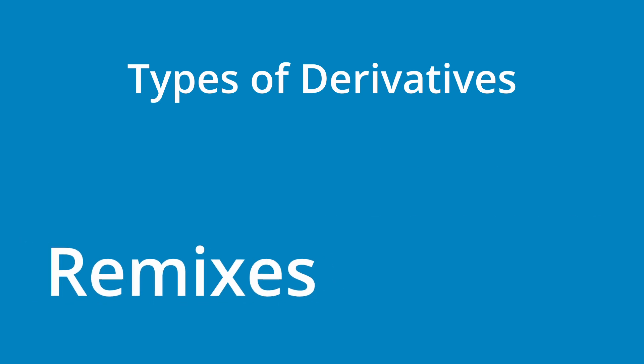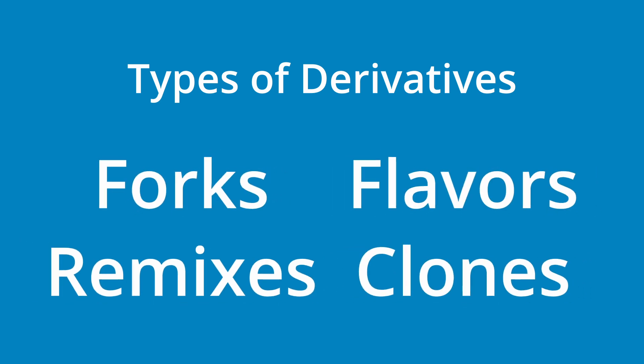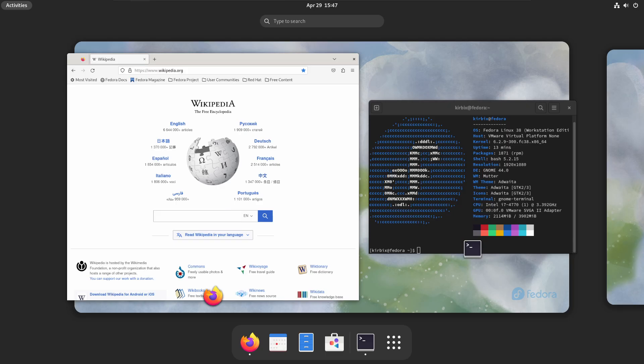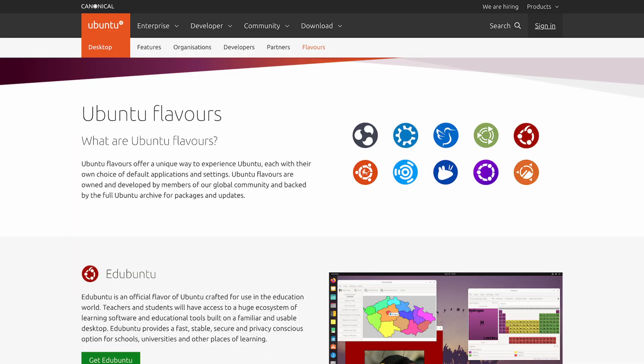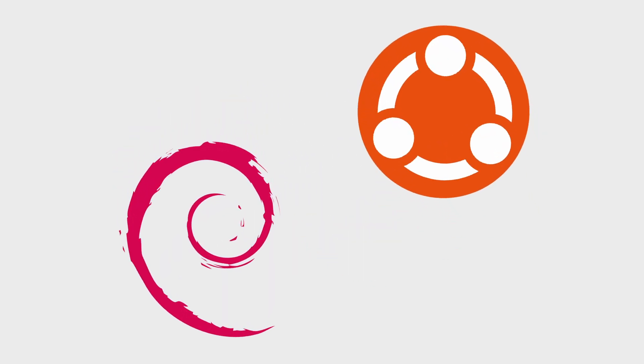To sum up, understanding the relationships between Linux distros and their derivatives is crucial for navigating the vast landscape of options. We've explored the various types of derivatives — remixes, flavors, clones, and forks — each with its own distinct characteristics. Remixes offer something new by modifying an existing distro, while flavors are officially recognized remixes sanctioned by the original distro. Clones closely mimic the base distro, while forks take a more creative route. Knowing these concepts will help you choose the right Linux distro that aligns with your needs and preferences.